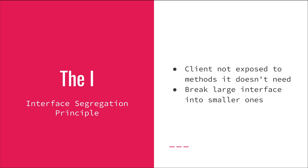The I in SOLID stands for Interface Segregation Principle, which says that clients shouldn't be exposed to the methods that they don't need. One way to achieve this is to break larger interfaces into smaller ones, so the interfaces should be cohesive and serve small pieces of functionality. Rather than having a large interface, you would have a couple of small interfaces that each serve only a single responsibility.